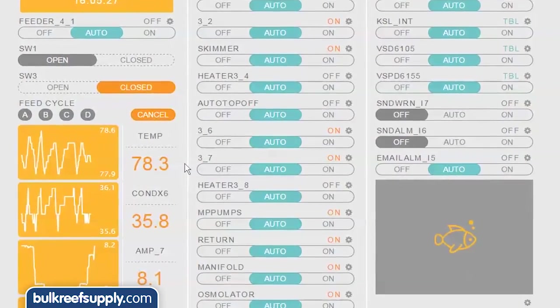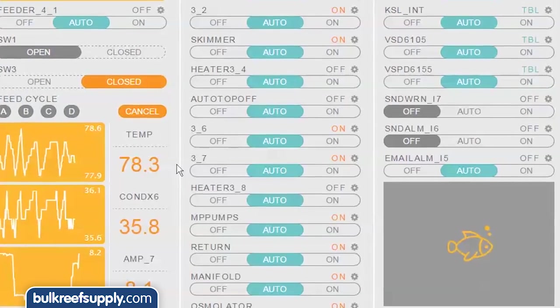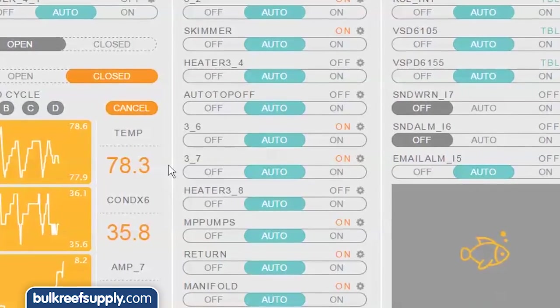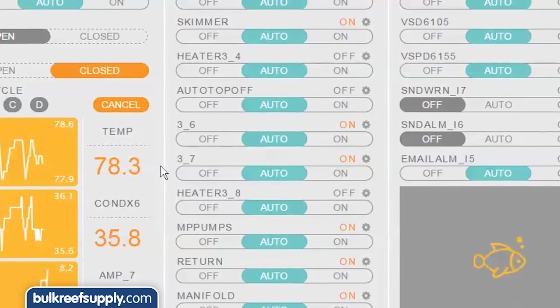For programming an outlet or alarm, it is pretty similar to programming a pH or ORP control. I will set up one based on controlling my auto top off and one for a warning alarm.